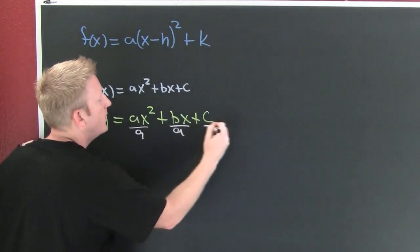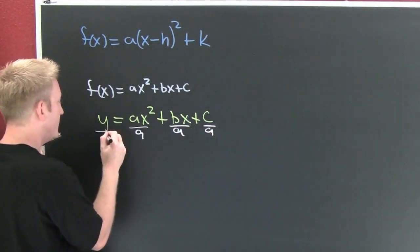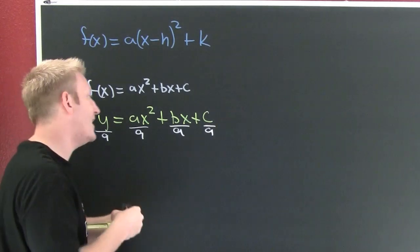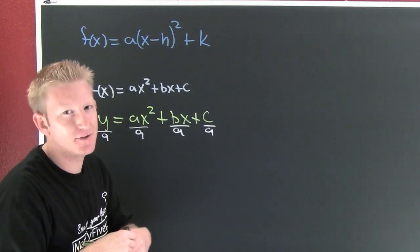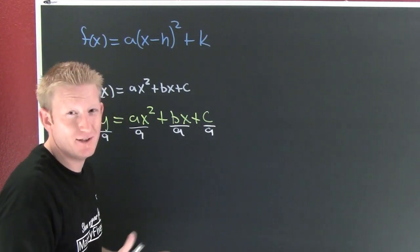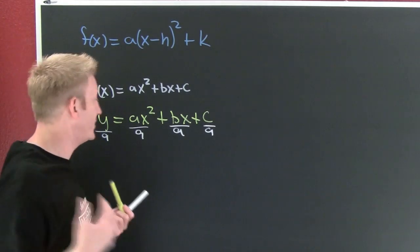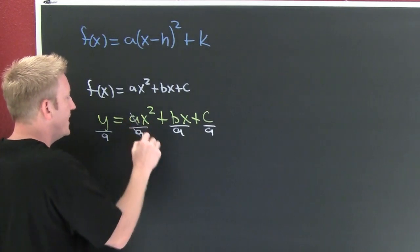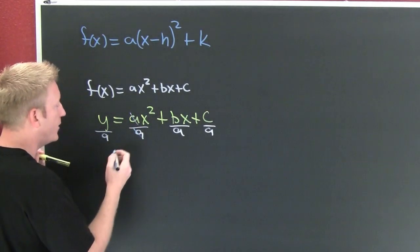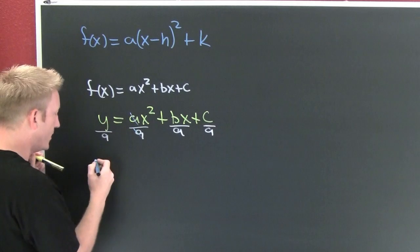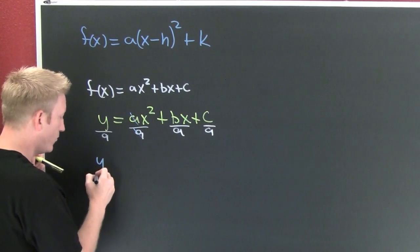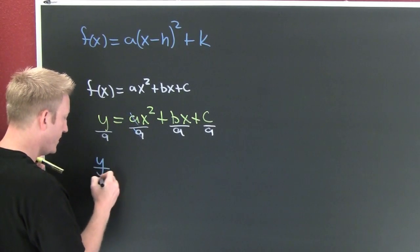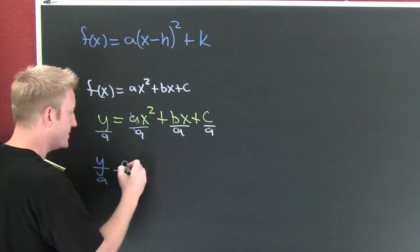Now this is an abuse of notation, we shouldn't be doing this with our function algebra, but hey we're on the edge and it works and it's nice and you're gonna like it. Then I need to shove my constants: y over a minus c over a is going to be equal to x squared plus bx.